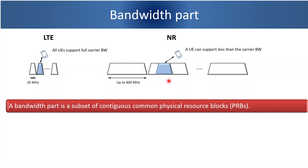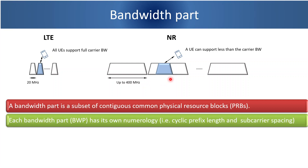In 5G, a UE can support less than the carrier bandwidth. We know that in 5G up to 400 MHz channel bandwidth is possible, so a UE is not required to support the entire 400 MHz band. It is possible for a UE to support a lesser band, and this lesser part is known as BWP or Bandwidth Part.